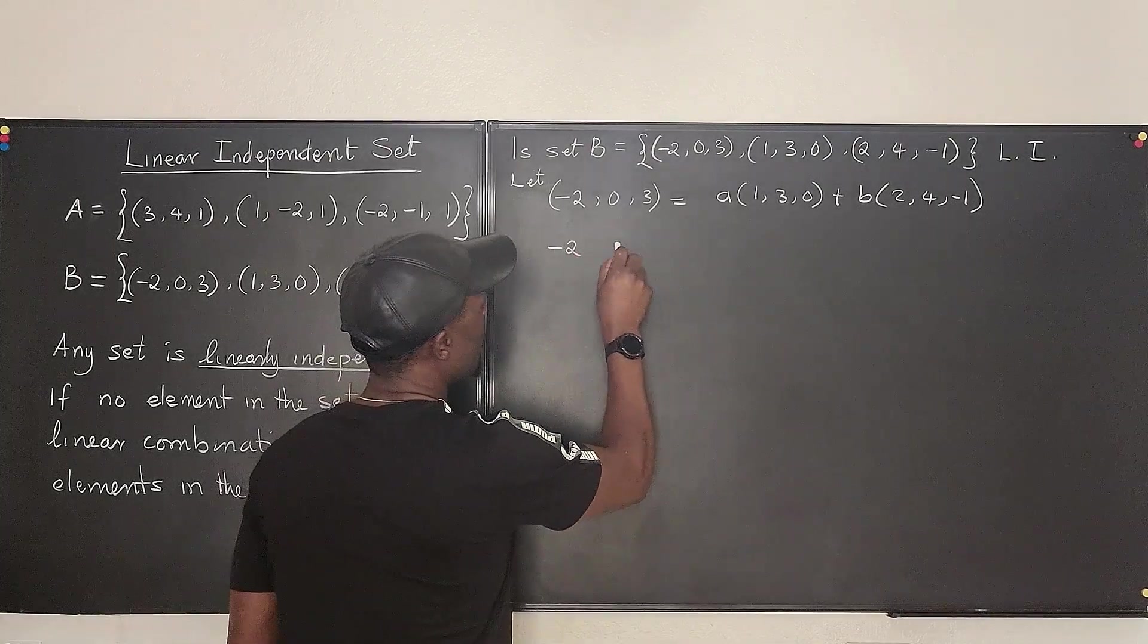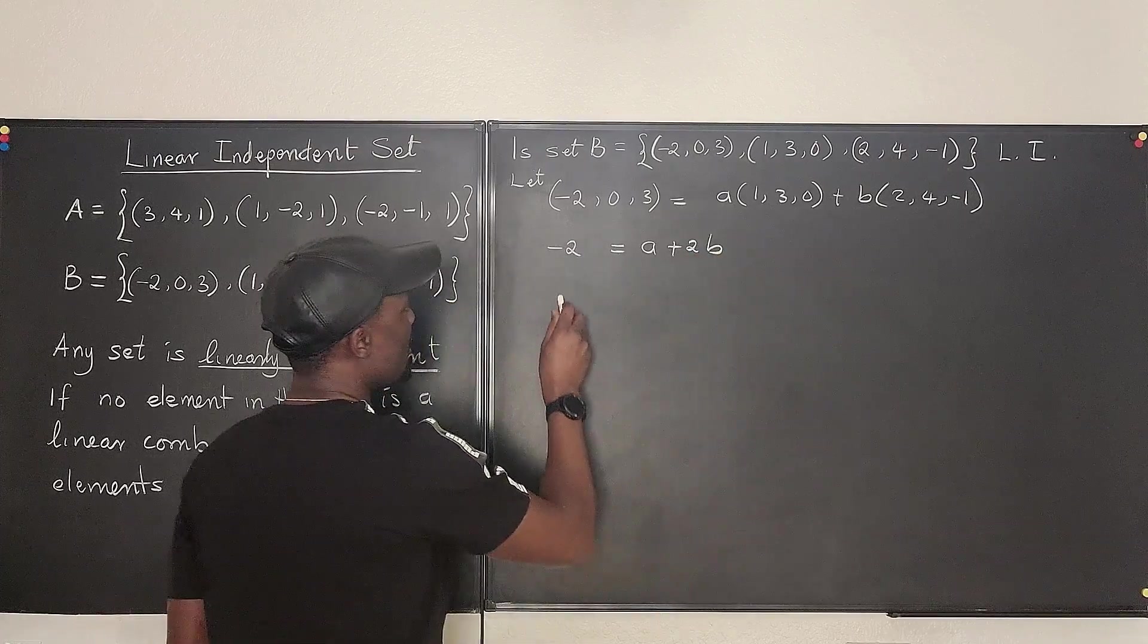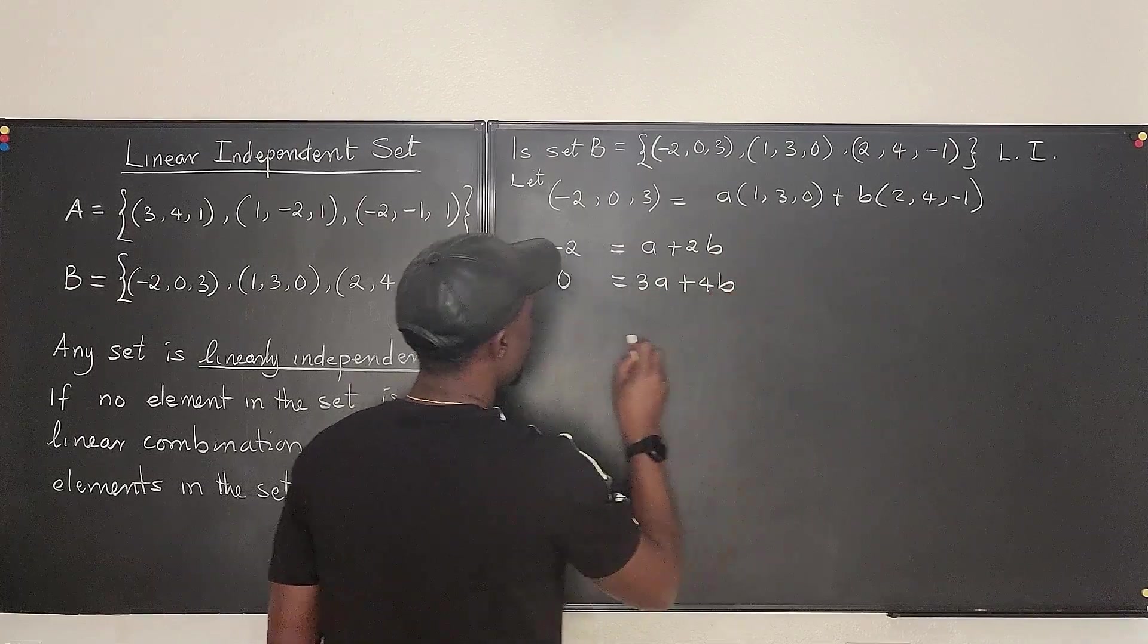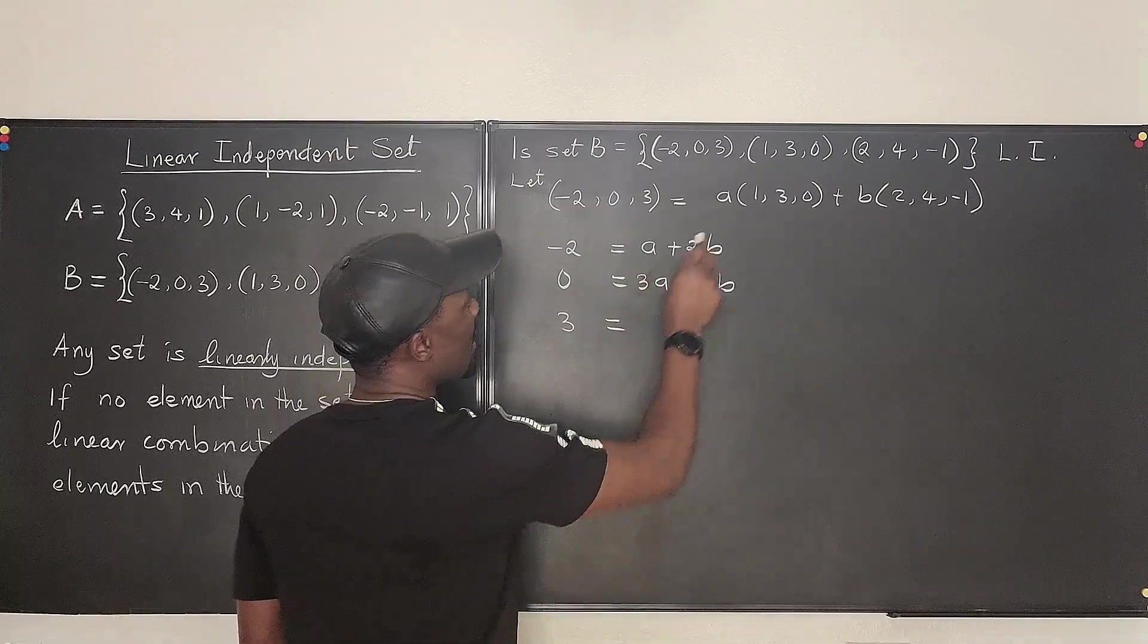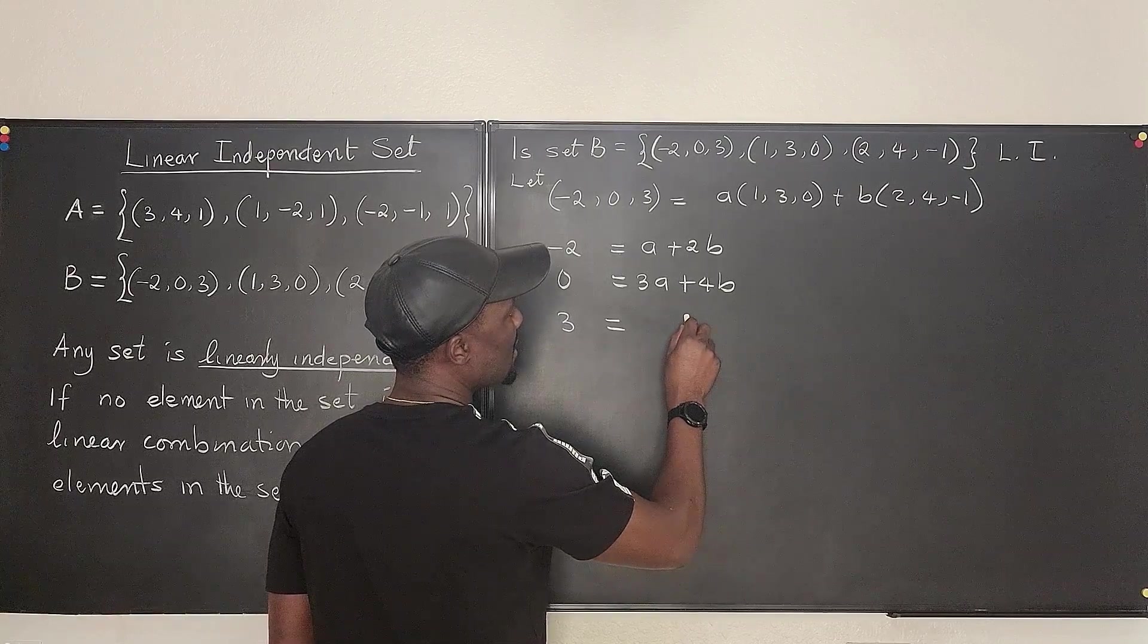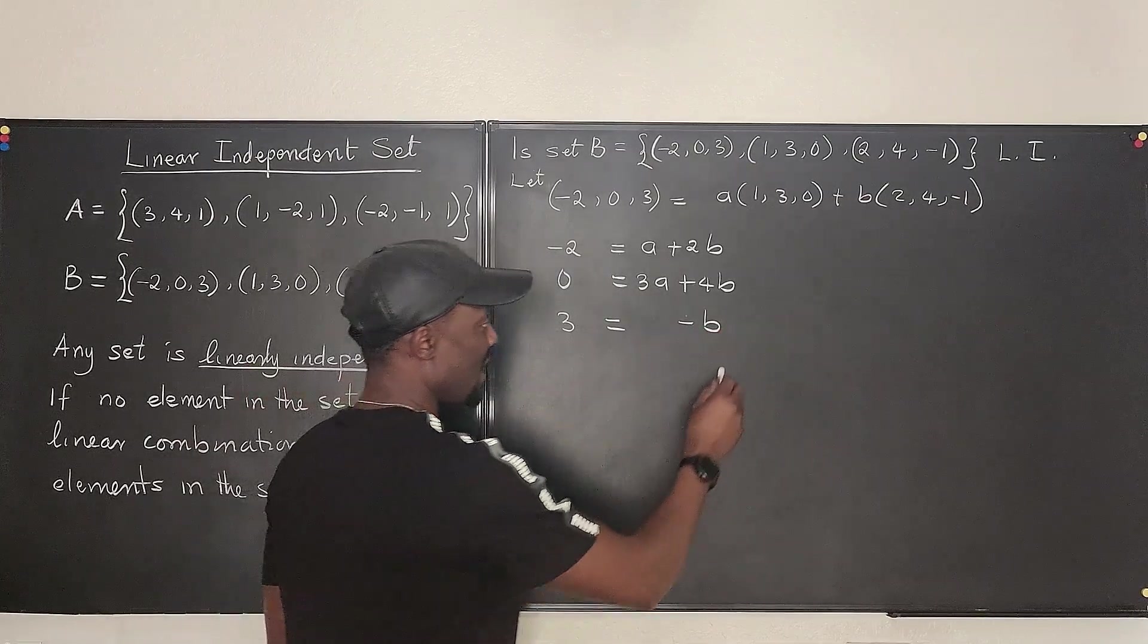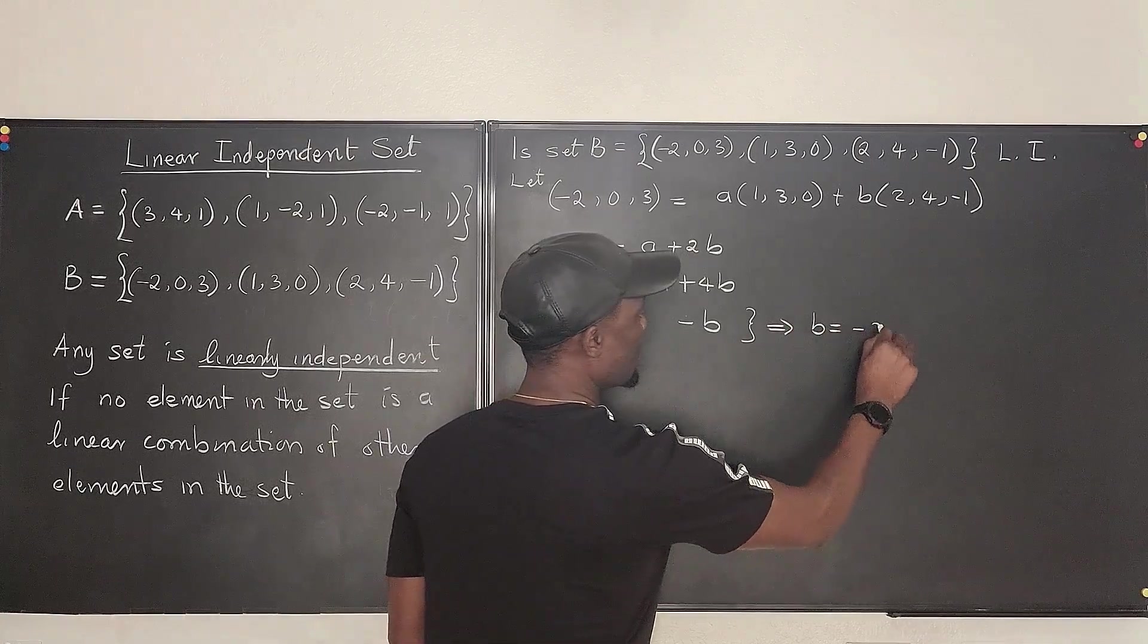We have negative 2 will be equal to A plus 2B. That's the first one. Second one, 0, must be equal to 3A and the middle plus 4B. And the next one is going to be 3, must be equal to 0A. So we don't write anything here. We just write plus, and this would be minus B. Oh, because clearly we can say that this implies that B equals minus 3.